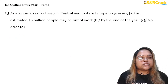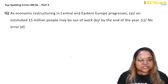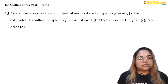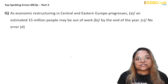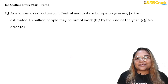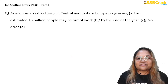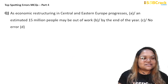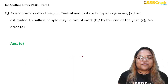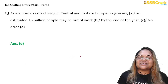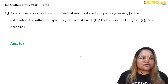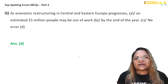Next question: 'As economic restructuring in central and eastern Europe progresses, an estimated 15 million people may be out of work by the end of the year.' If you think there is no error in this sentence, you are absolutely right. This sentence is grammatically correct — there is no error. The answer is D, no error. Congratulations if you answered correctly.